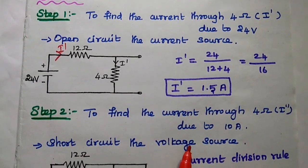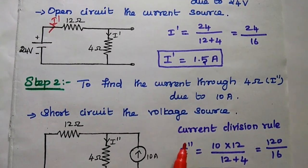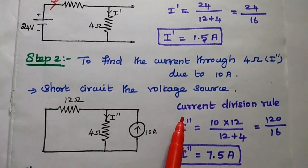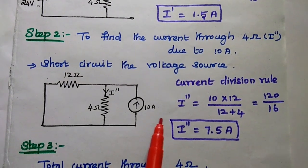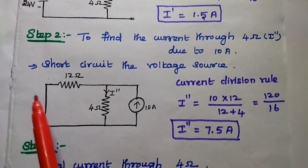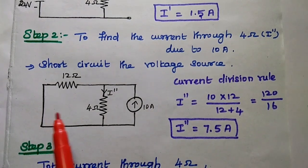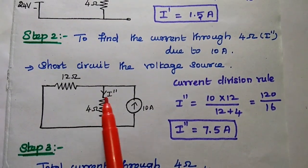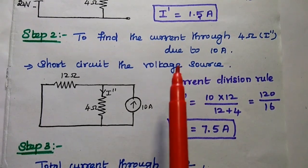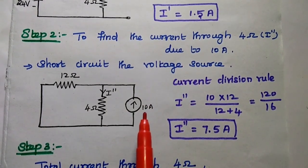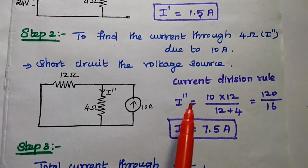The next step: we are going to find out the current through the 4 ohm resistor due to the 10 ampere current source. At that time, the voltage source is short-circuited. So here we are going to find out the current through the 4 ohm resistor due to the current source 10 ampere, that is I double dash.